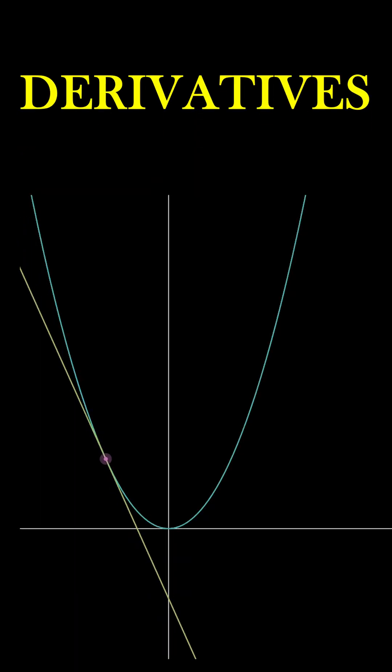Derivatives essentially tell us the change in rate of a function in relation to its input. It gives us the instantaneous rate at a certain point.